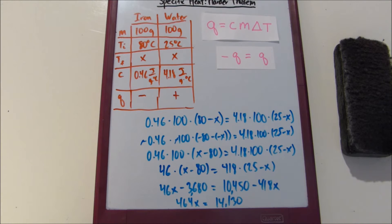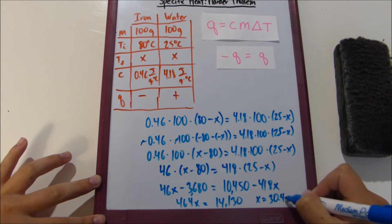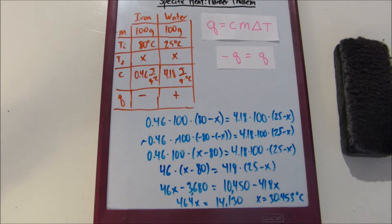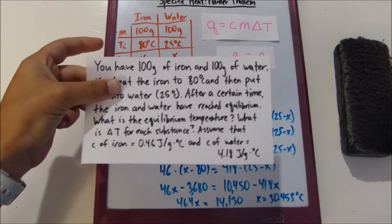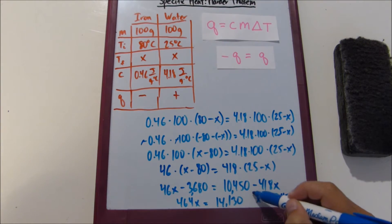And then we simply divide 14,130 by 464. We get that our X is 30.453 degrees Celsius. So in our original problem, it asked for the equilibrium temperature and that is our X here.